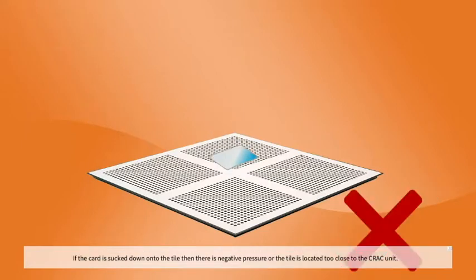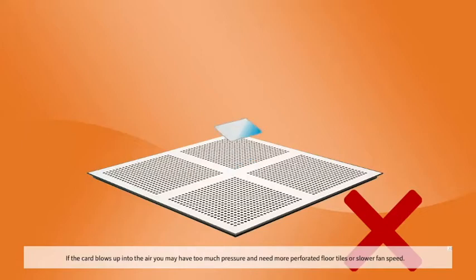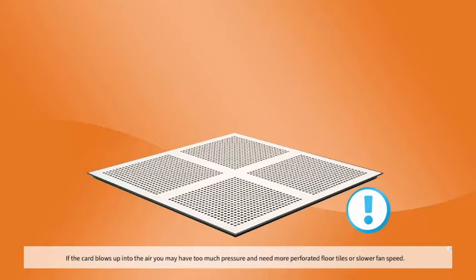If the card is sucked down onto the tile, then there is negative pressure, or the tile is located too close to the CRAC unit. If the card blows up into the air, you may have too much pressure and need more perforated floor tiles or slower fan speed.